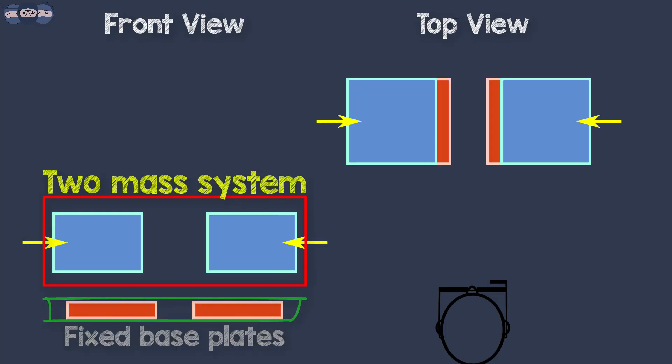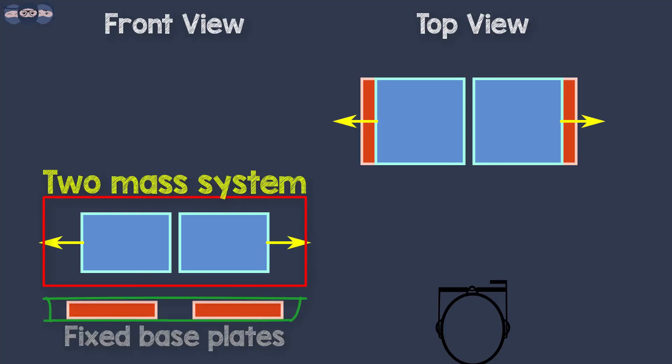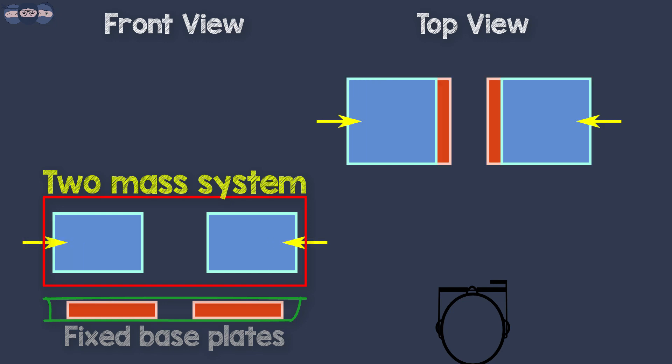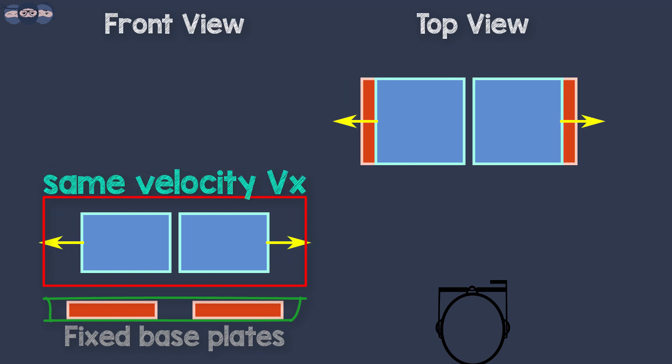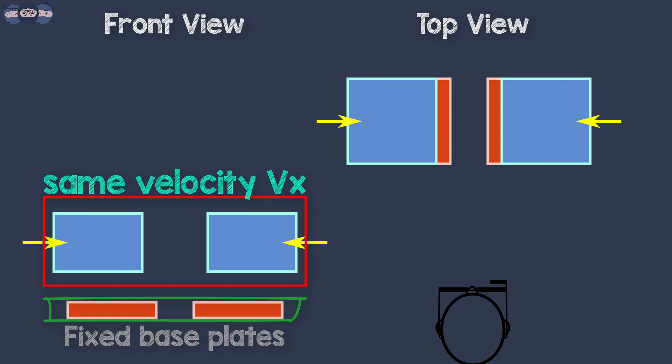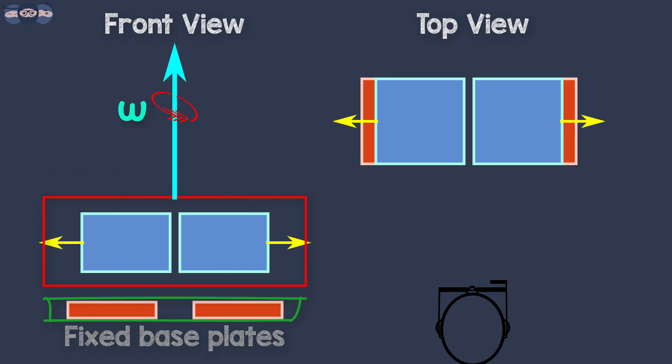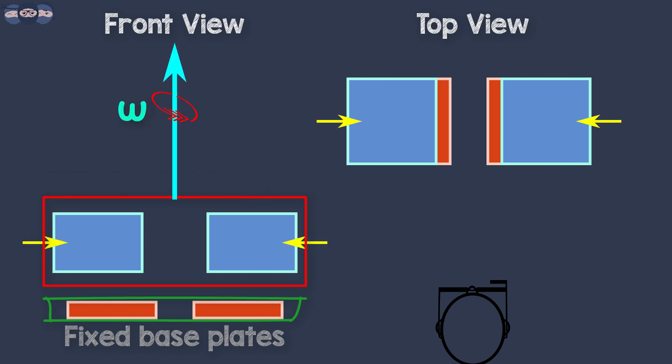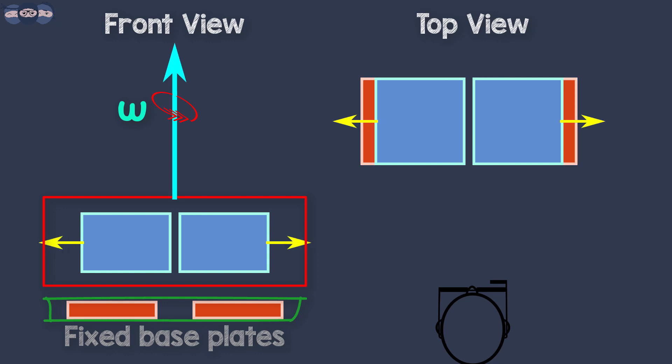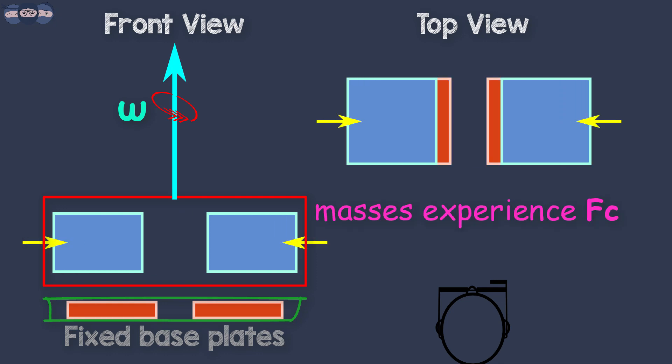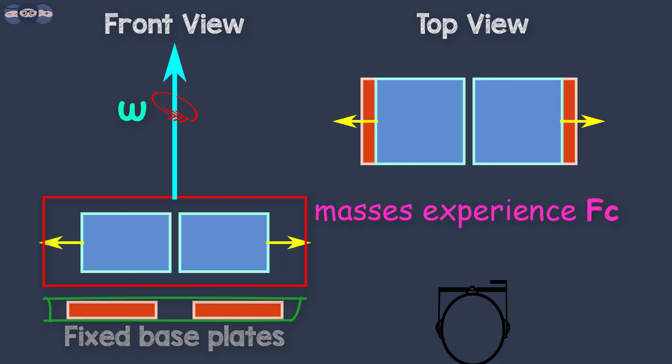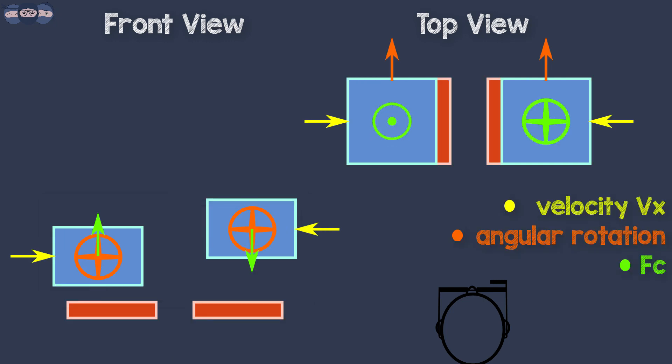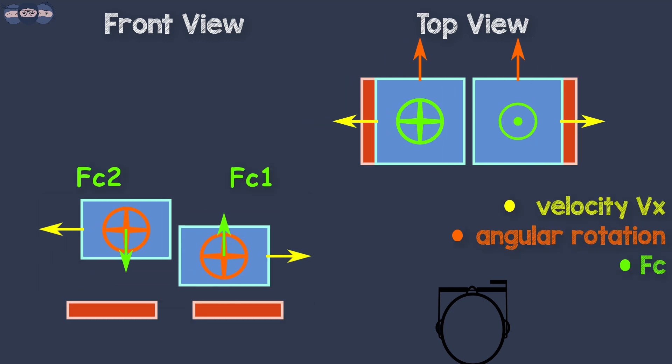The gyroscope uses a two-mass system which keeps moving in opposite direction continuously, having same magnitude of velocity. When this whole system experiences angular rotation, both the masses experience Coriolis force. However, they have opposite directions as per the right-hand rule.